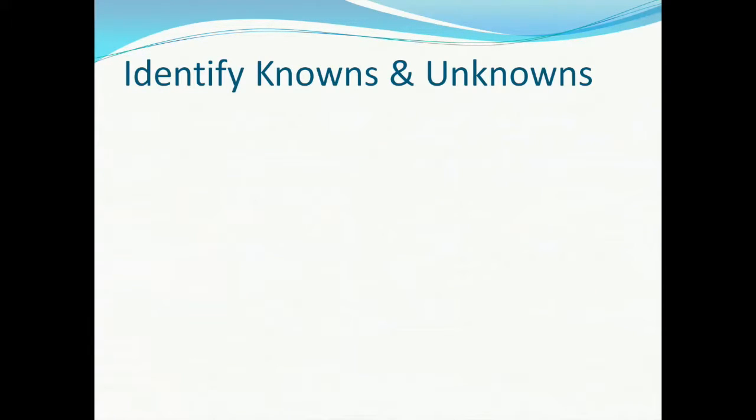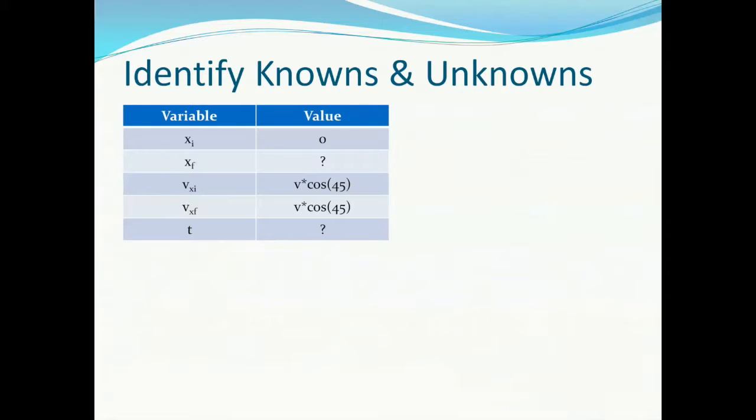Now we identify our knowns and unknowns. Let's start with the x direction. In the x direction, we set the initial position equal to 0. The final x position is what we're hoping to solve for. Because there's no acceleration in the x direction, the initial and final x velocity component is the same. And recall from our trigonometry relations that this is given to us by the cosine of the launch angle. Finally, the time it takes to reach from the initial position to the final position is also asked of us, and so therefore we don't know it. Because every equation in the x direction has either x final or t, it appears we're stuck.